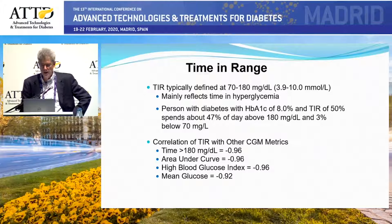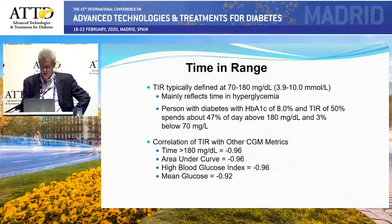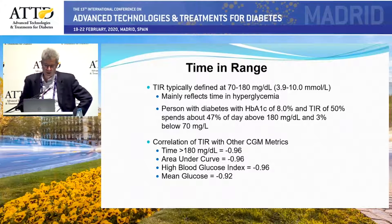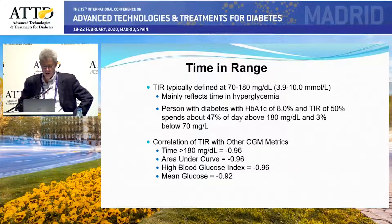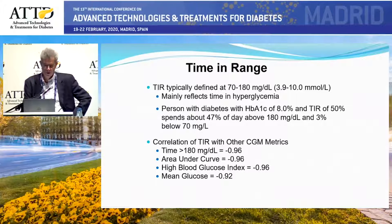When we look at the time out of range — the 50% time out of range — more than 90% of that is going to be hyperglycemia. So it's not surprising that time in range correlates with other CGM metrics: time above 180, area under the curve, HBGI, or mean glucose, with correlations around 0.95 or higher for most of those.